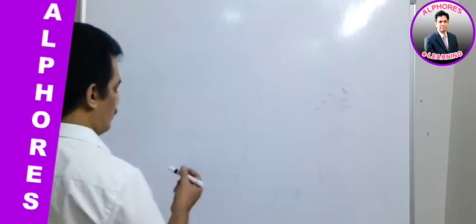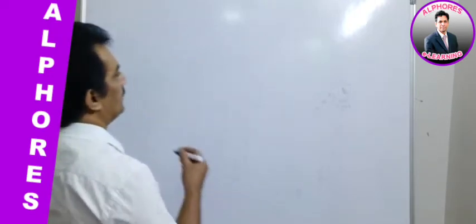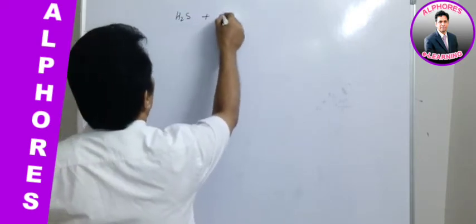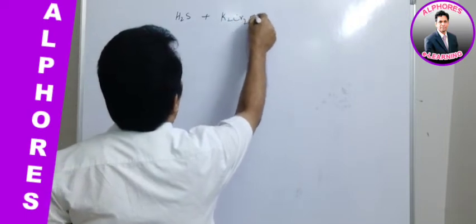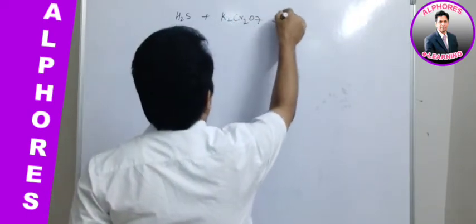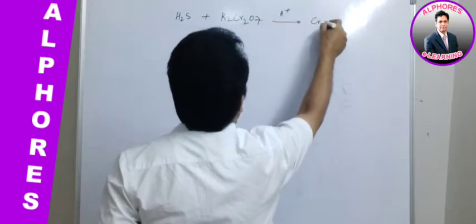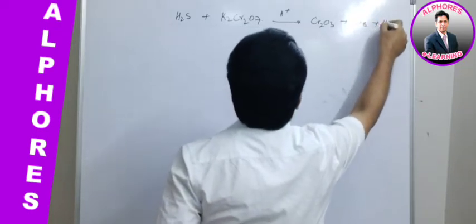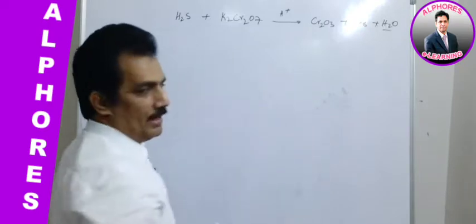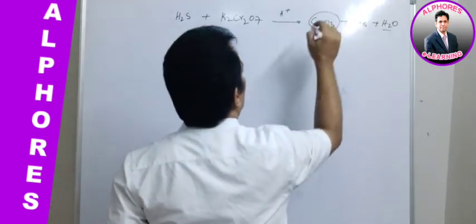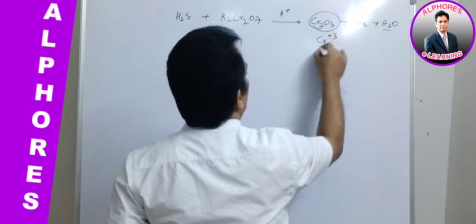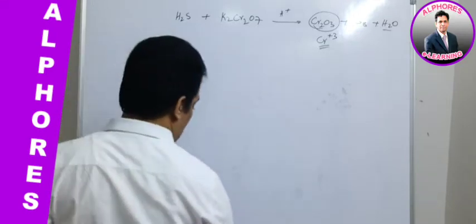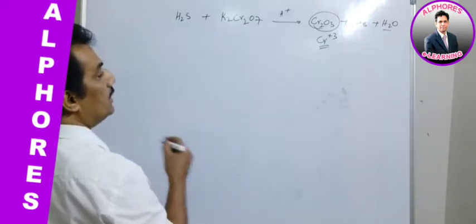Let me give one more equation to balance in acid medium: H2S reacting with K2Cr2O7 in acid medium, providing Cr2O3 and S8 and H2O. Instead of Cr2O3, what we actually get is Cr³⁺. Now let us try to balance this in acid medium.